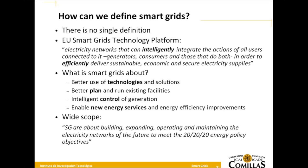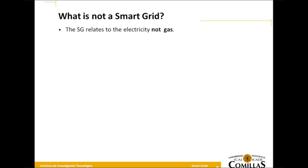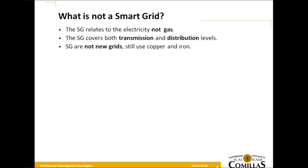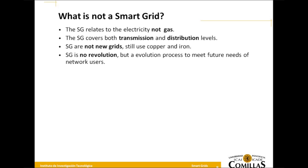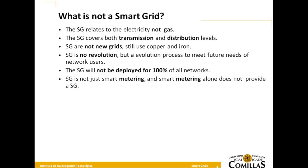There is another approach to defining smart grid: building, expanding, and operating the system to achieve the 2020 objectives. It is also very important to know what is not a smart grid. A smart grid is not about gas. It covers both transmission and distribution levels. Smart grids are not new grids — they still rely on copper and iron. There is no revolution, but rather the current evolution of the existing system. And importantly, smart grid does not mean 100% of smart technology will be deployed — metering is key but not the whole picture.